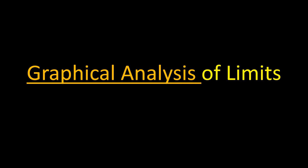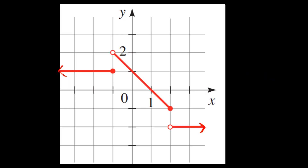When the graph of functions are given, then we can find the limit of a particular function — we call it graphical analysis of limits. So for example, we have this graph of a particular function, let's say this one is function g of x. So how do we understand graphical analysis?